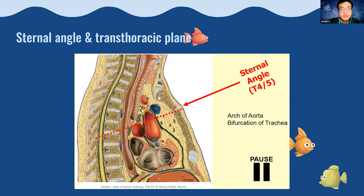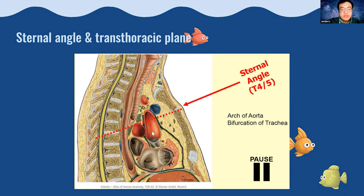The sternal angle is where the manubrium joins the body of the sternum. Drawing a line posteriorly through the sternal angle to the T4–T5 vertebral level gives the transthoracic plane, which divides the superior and inferior mediastinum. Two main landmarks pass through the transthoracic plane: the arch of the aorta — where the ascending aorta turns into the arch — and the carina, where the trachea bifurcates into two bronchi, one going to each lung.